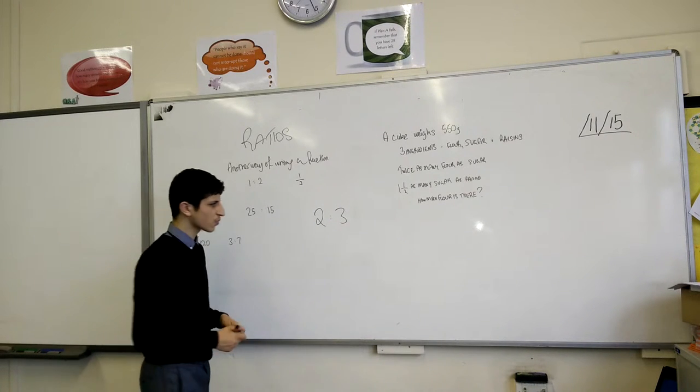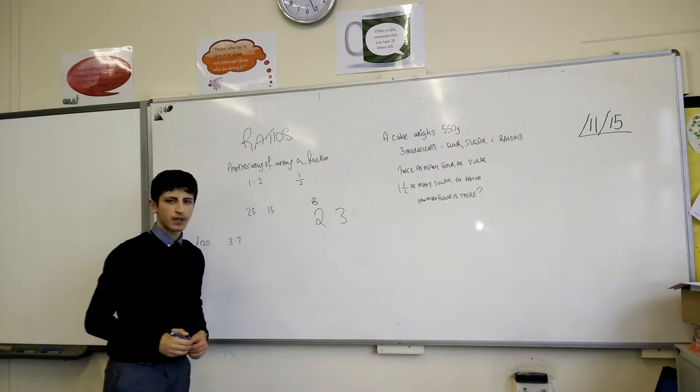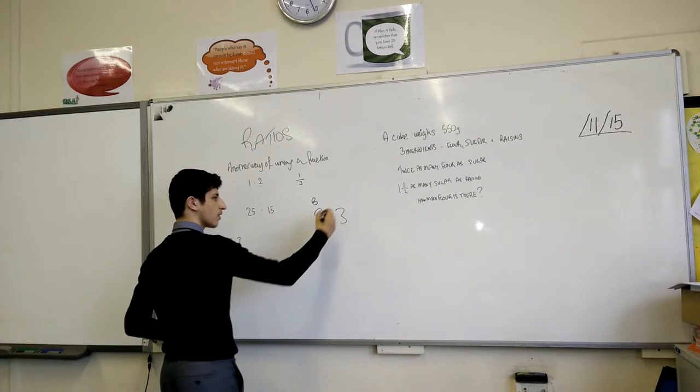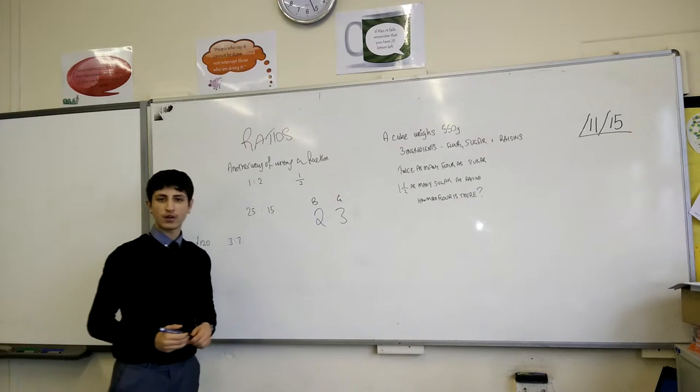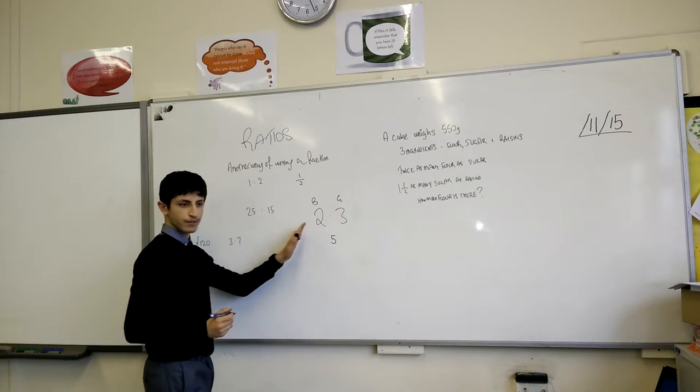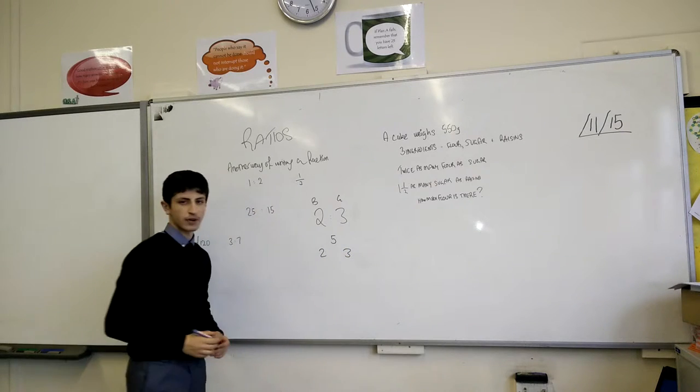For example, a good example is sweets. If I had two blue sweets, then I would say that for every two blue sweets I'm going to have three green sweets. So in a total ratio, out of five sweets, two of them have to be blue and three of them have to be green.